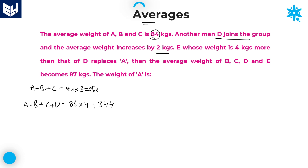From this it is very easy to get the value of D. Because we know that A plus B plus C is equal to 252 and A plus B plus C plus D is equal to 344. Therefore, D is equal to 344 minus 252, which is equal to 92.